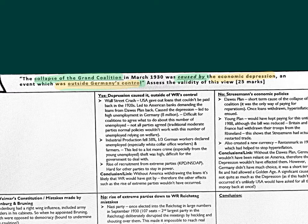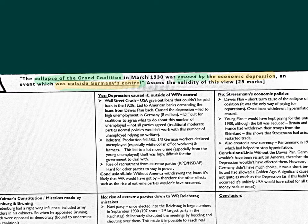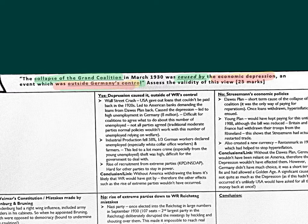The collapse of the Grand Coalition was caused by the economic depression, something which was outside of Germany's control. The Grand Coalition refers to the moderate coalitions we'd seen working in the Weimar Republic in its early years, especially under Stresemann — moderate parties like the Centre Party, the DNVP, etc. This collapsed in March 1930 when we see the rise of more right-wing parties like the NSDAP, the Nazi Party as they later became known.